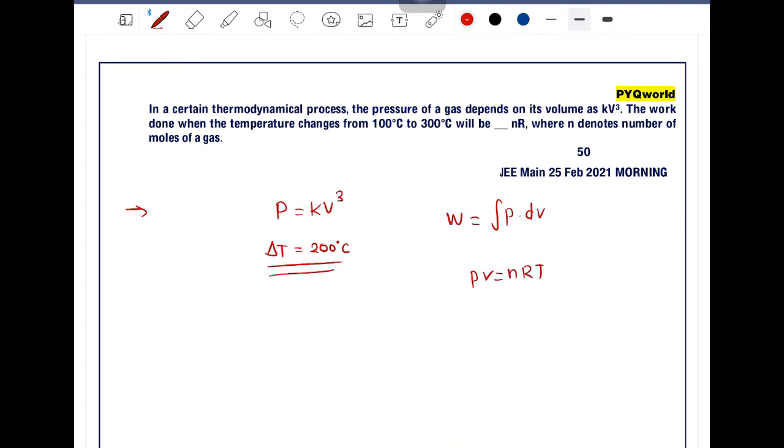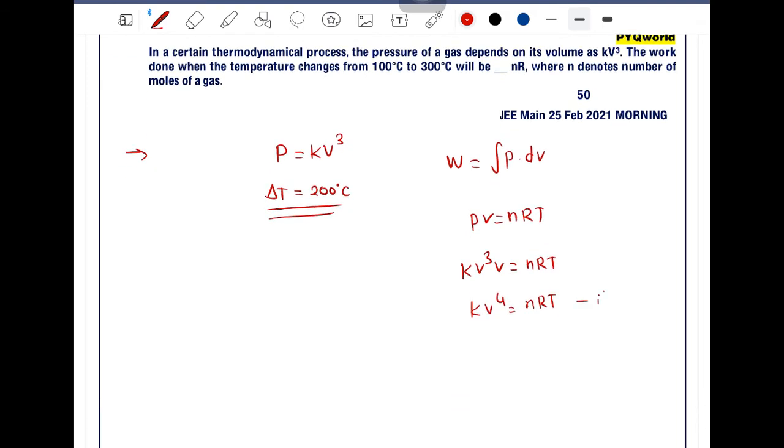We can put the value of pressure here: kV³ × V = nRT, that is kV⁴ = nRT. If we differentiate this equation with respect to temperature, then 4kV³(dV/dT) = nR.